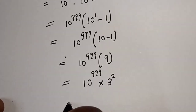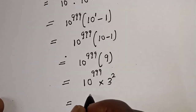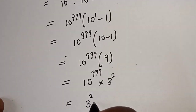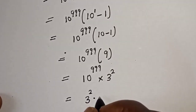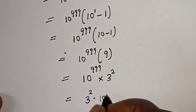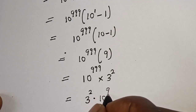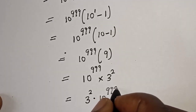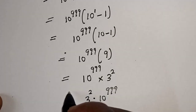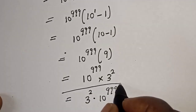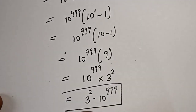Therefore, we have 3 squared multiplied by 10 raised to power 999, and that is our final answer.